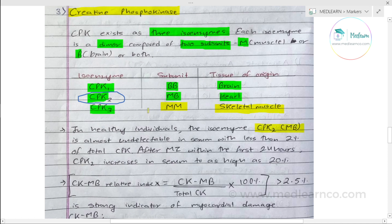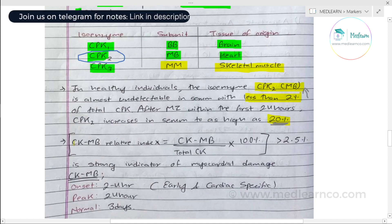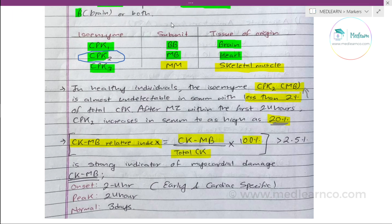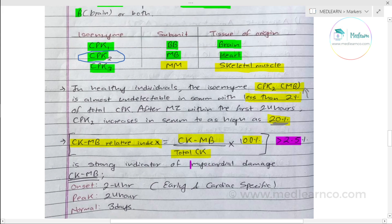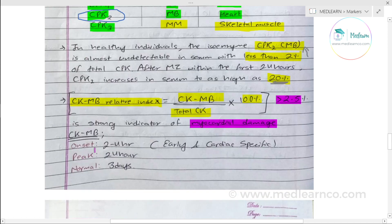In healthy individuals, CPK-2 (CK-MB) isoenzyme is less than 2% of total CPK in serum. In myocardial infarction, it can increase as high as 20% of total CPK. The CK-MB relative index is CK-MB divided by total CK multiplied by 100%. A value greater than 2.5% is a strong indicator for myocardial damage. The onset is 2–4 hours, peak at 24 hours, and returns to normal by 3 days.